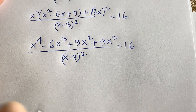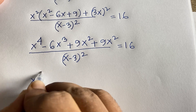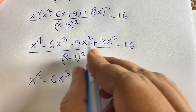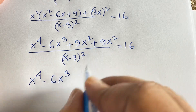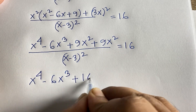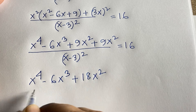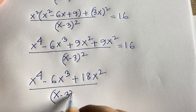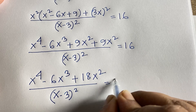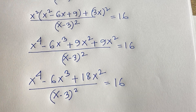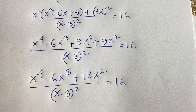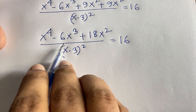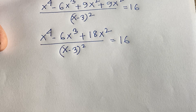Combining like terms: 9x² + 9x² = 18x². So the numerator becomes x⁴ - 6x³ + 18x², over (x-3)² = 16.